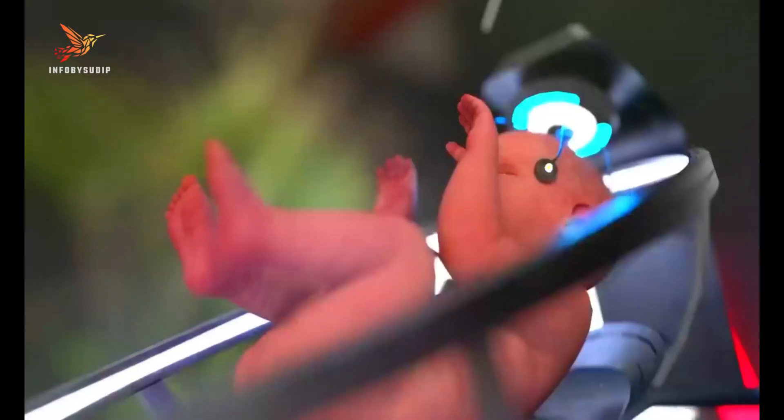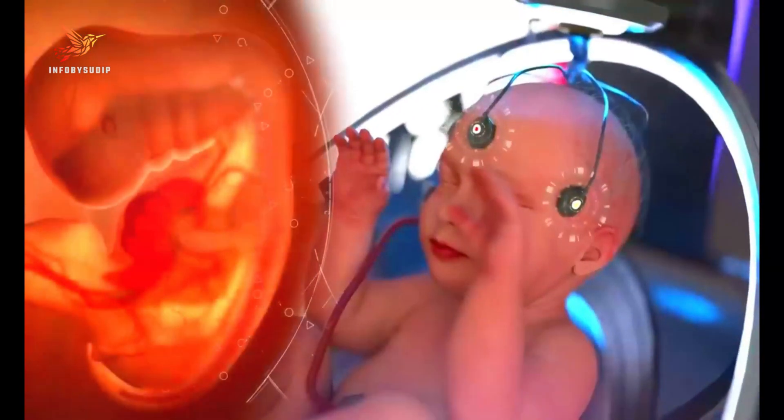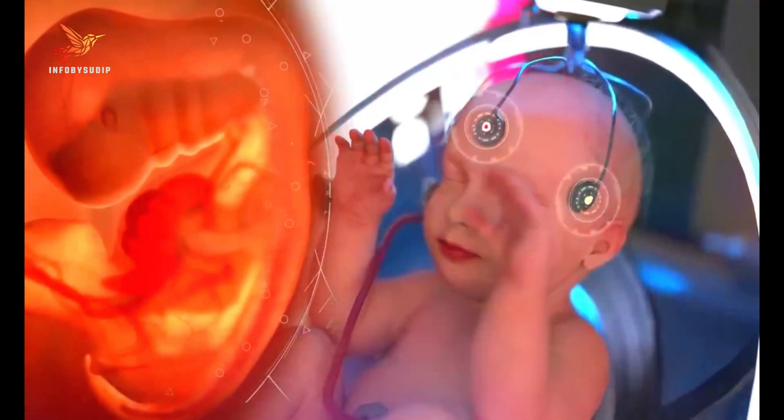Couples who wish to use Ectolife would first have their embryos created in a petri dish. The embryos would then be implanted into the growth pods, where they would develop for nine months.